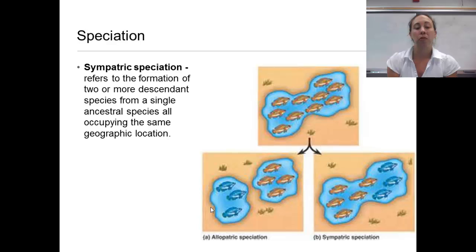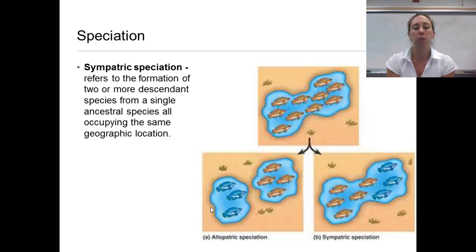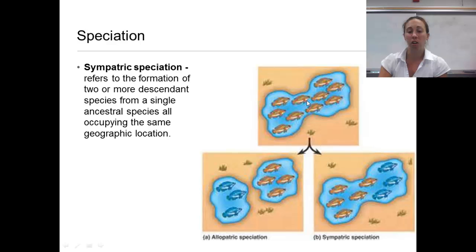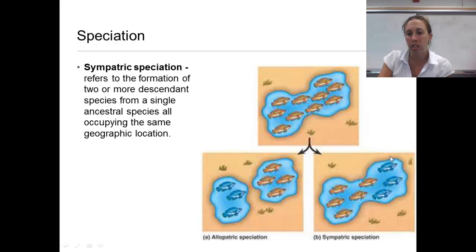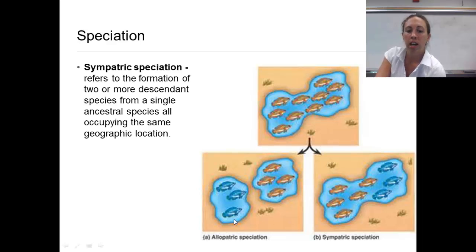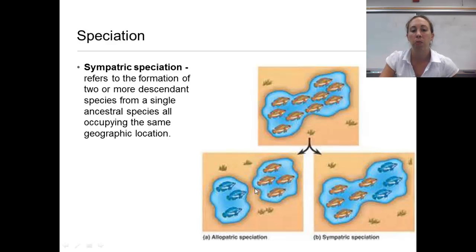Sympatric speciation refers to the formation of two or more descendant species from a single ancestral species all occupying the same geographic location. For example, fish in a pond in the same area can become two different species — blue fish and orange fish — within that same location. This is opposed to allopatric speciation, where the pond gets divided by a strip of land, resulting in geographic separation producing two different species.